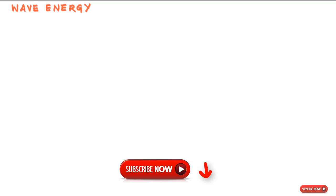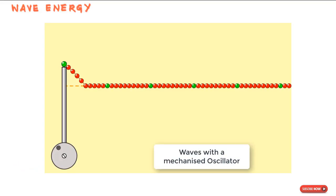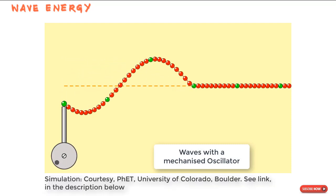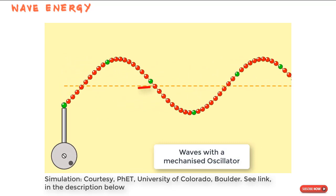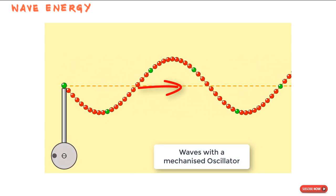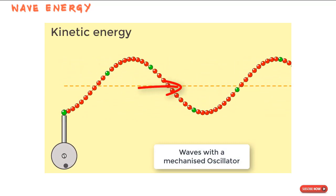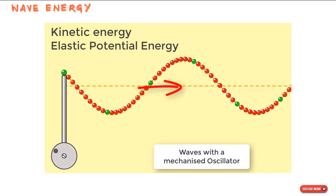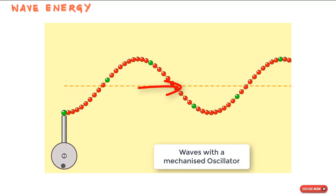When we induce a wave on a straight string, what we're doing is providing energy to the string to set it in motion. The moving wave transports this energy as kinetic energy and elastic potential energy. We touched upon this in an earlier lesson, but let us dive deeper into each type of energy now.